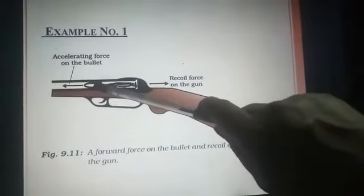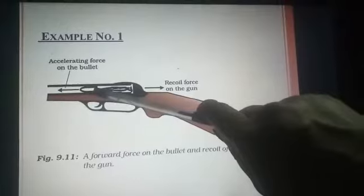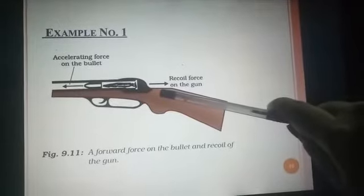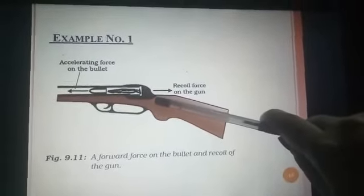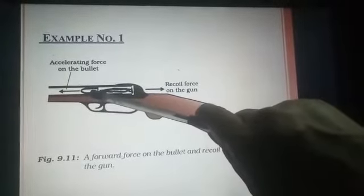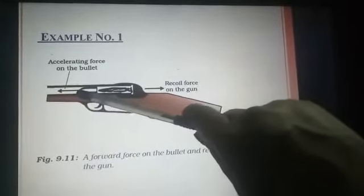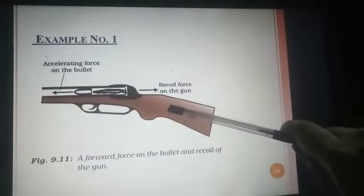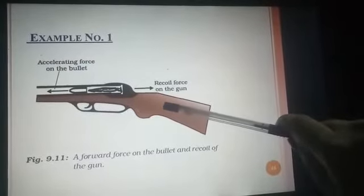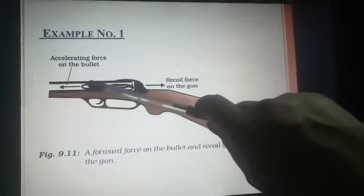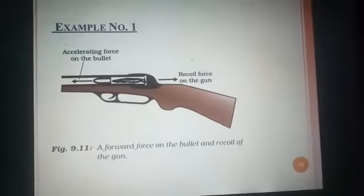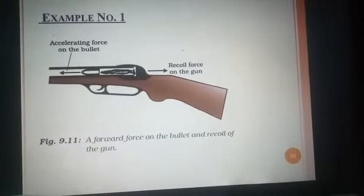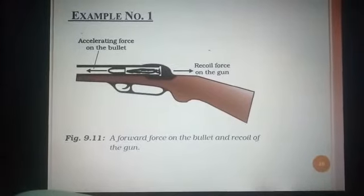If mass of the bullet is less, then acceleration of the bullet is more, and acceleration of the gun is less. Acceleration means rate of change in velocity, so the change in velocity of the bullet is more — speed of the bullet is more in a particular direction. The action is by the bullet and reaction is by the gun. Figure 9.11A shows: forward force on bullet and recoil of the gun.